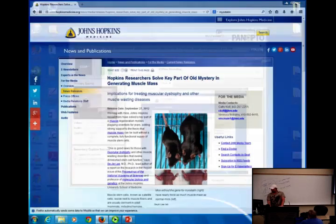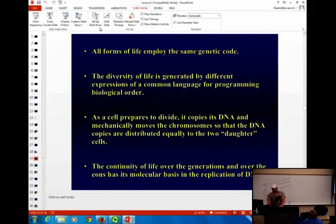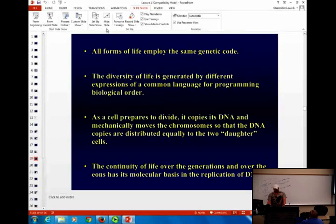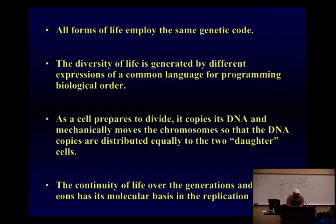Not only can we add genes into organisms, but we can take them out as well. There's only one documented case of a human with this defect — a child in Germany. People are watching this to try to figure out if there are any side effects. As far as we know, it doesn't have any negative effect. Those bulls' meat sells for really expensive because steaks are made of muscle.